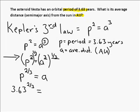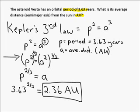But for right now, give it your best shot, and when you're ready to hear the answer, go ahead and hit play here, and I get 2.36 AU. So that's the average distance from the Sun.